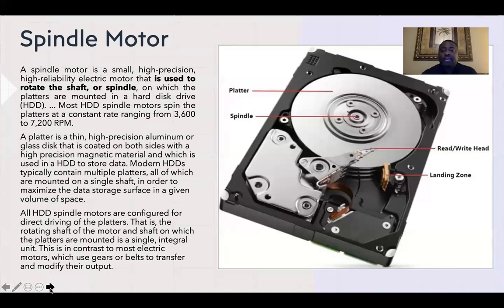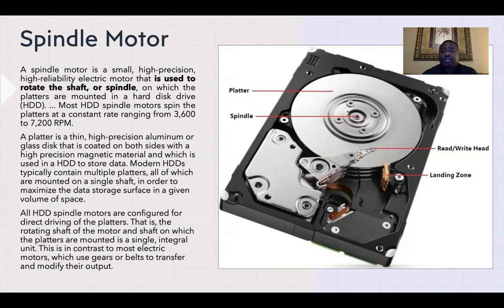The spindle is a high-precision, reliable electric motor that's used to rotate the shaft, or the spindle, which is in the middle. Most hard drive spindle motors spin the platters at a constant rate ranging from 3,600 to 7,200 RPMs.